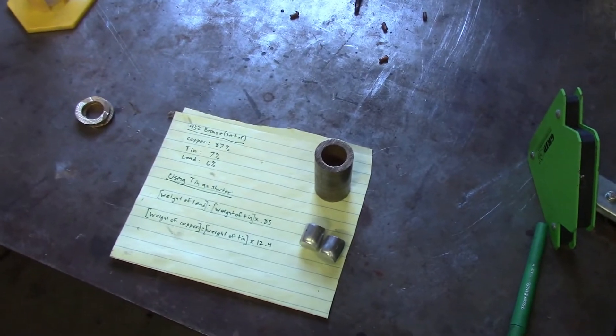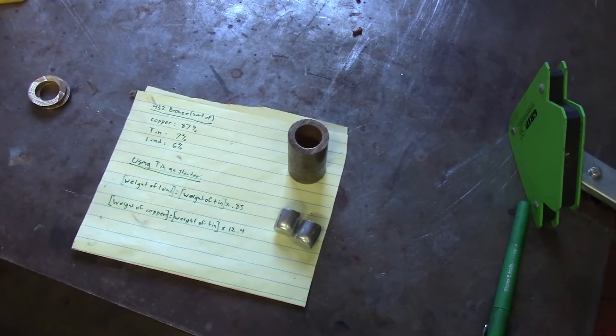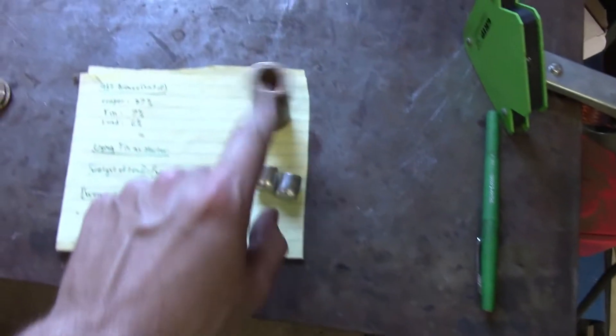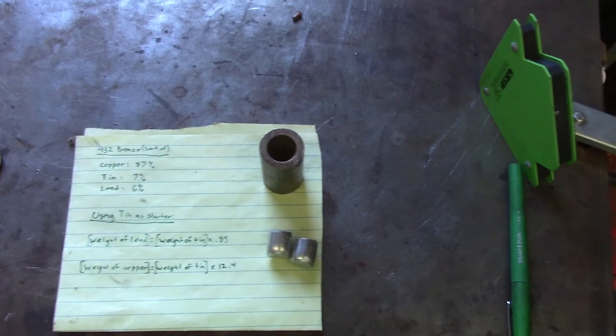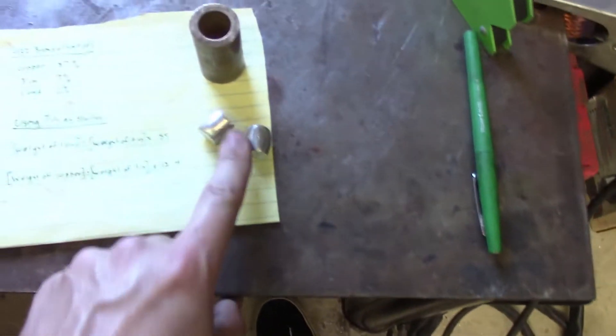So since I have a little bit of it already, the plan is to melt that chunk, get a little pool going, and I can drop in the lead and the tin. That's the tin.